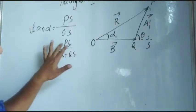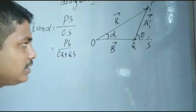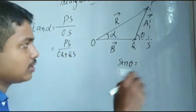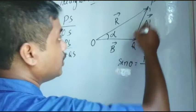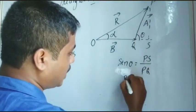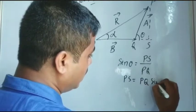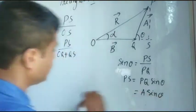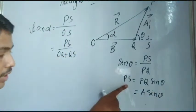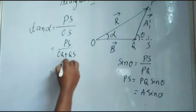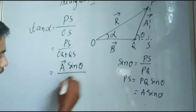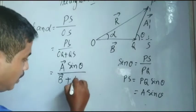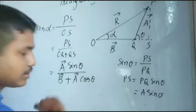PS and QS we have already calculated. Sin theta equals perpendicular by hypotenuse, so the perpendicular was PS and the hypotenuse was PQ. Therefore PS equals PQ sin theta. And PQ is nothing but A, so it is A sin theta. In place of QS, it will be A cos theta. So tan alpha equals A sin theta divided by OQ plus A cos theta, where OQ is your vector B.